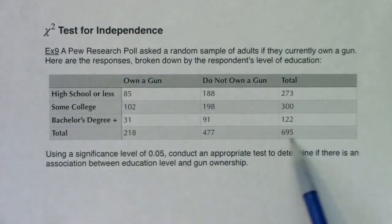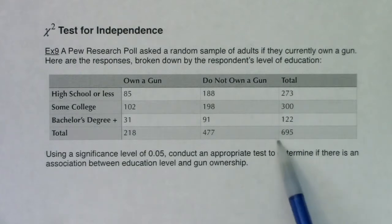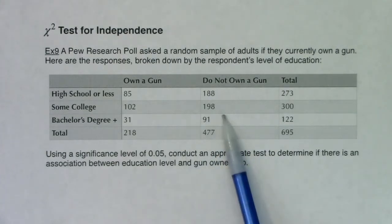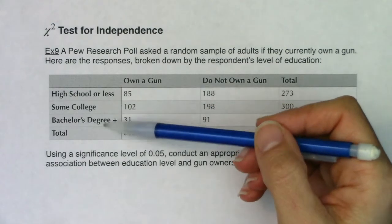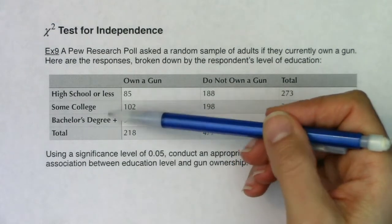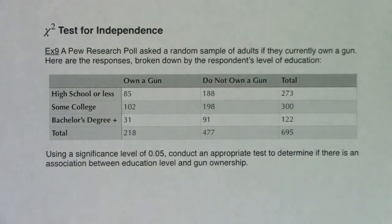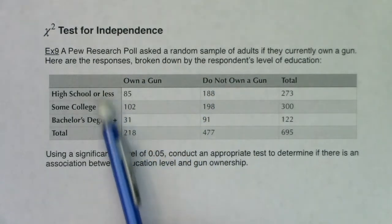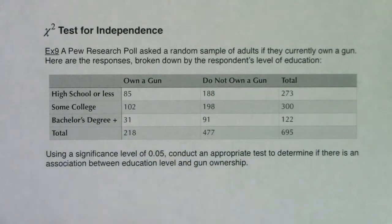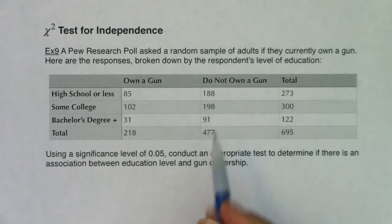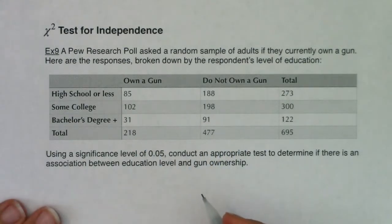What was the variable here? I was asking each of these 695 people whether or not they owned a gun — yes or no — and what kind of education they had: high school or less, some college, or bachelor's degree or higher. So there are two categorical variables here: gun ownership and education level. And since all of these numbers are frequency counts, you know you're going to move over to proportion land.